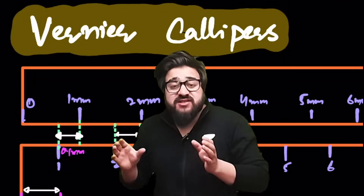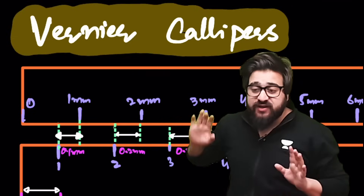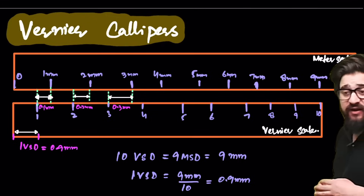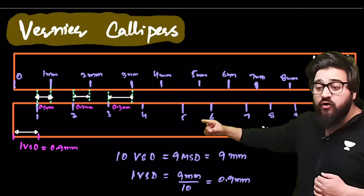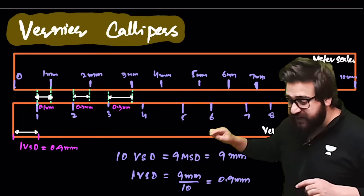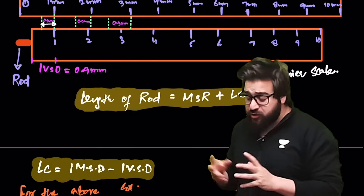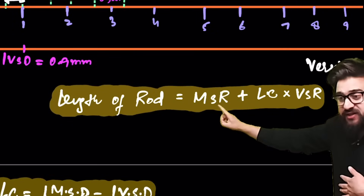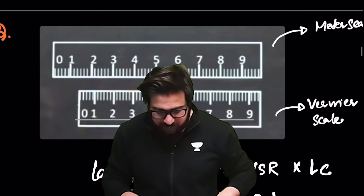To measure lengths smaller than 1 mm, we use the vernier calipers. The vernier caliper has two scales: the main scale and the vernier scale. The vernier scale has 10 divisions, where 10 vernier scale divisions equal 9 main scale divisions. The least count of the vernier caliper is 0.01 mm, the minimum reading that can be taken.